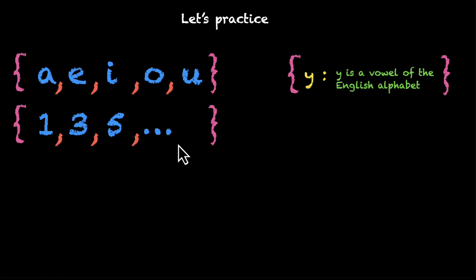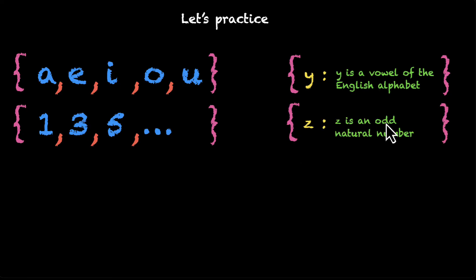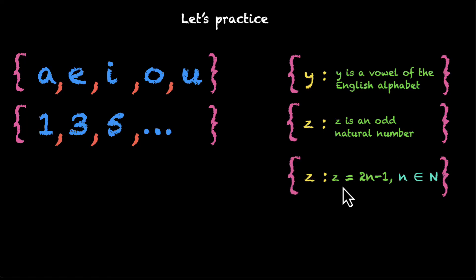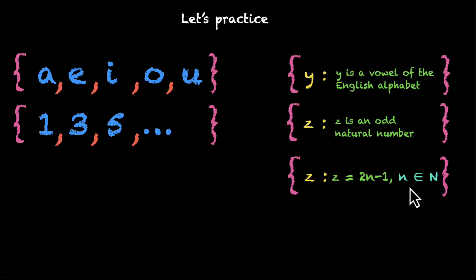Next: 1, 3, 5, and so on. What's the question? We are looking for all z where z is an odd natural number. If you want to be more mathematical, you can say we are looking for all z such that z equals 2n − 1 and n belongs to the natural numbers. That's one way to write odd numbers — 2n for even numbers and 2n − 1 for odd numbers. You can verify: putting n = 1 gives 2(1) − 1 = 1; putting n = 2 gives 2(2) − 1 = 3, and so on.